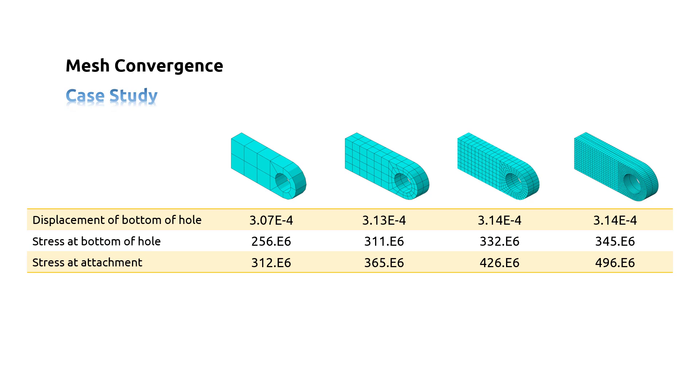The coarse mesh predicts less accurate displacements at the bottom of the hole. But the normal, fine, and very fine meshes all predict similar results. The normal mesh therefore converges as far as the displacements are concerned.